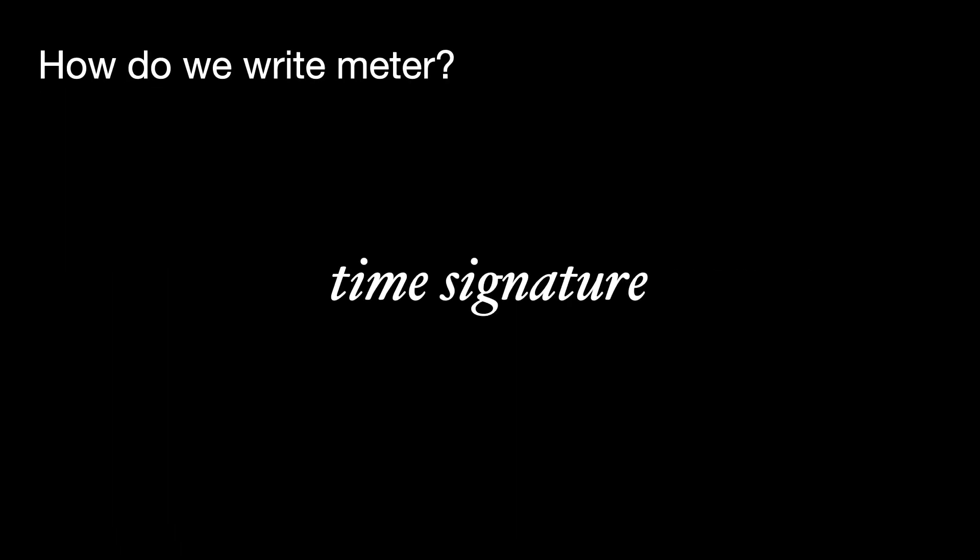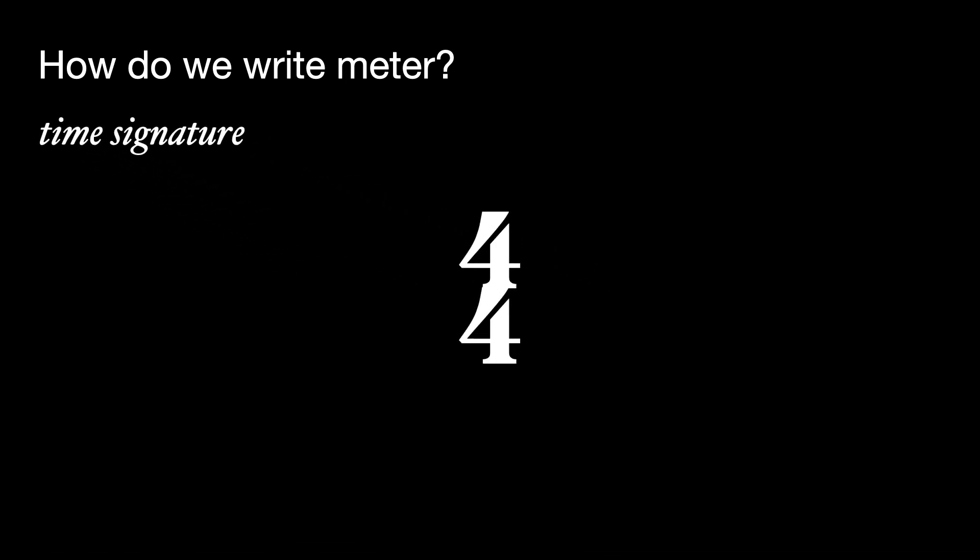So how do we write meter? We use what's called a time signature. A time signature has two numbers on top of one another. The top number tells you how many beats are in a measure, and the bottom number tells you what notated value corresponds to a beat.